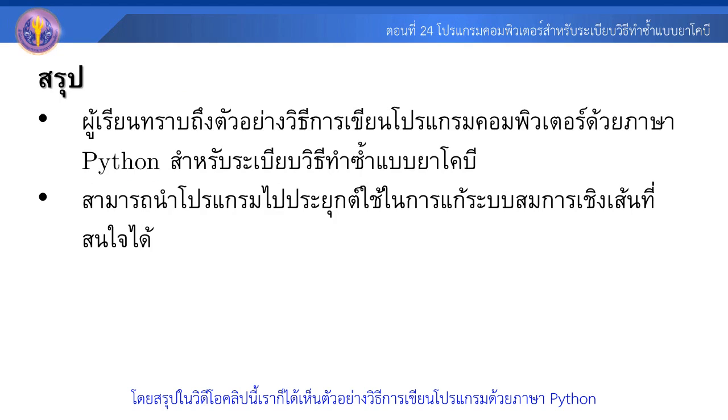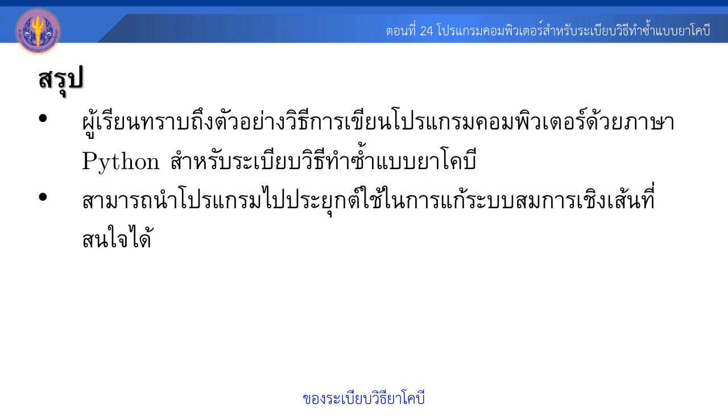จากนั้นลอง Run Program ดูนะครับ ก็จะพบว่าในตัวอย่างนี้เราใช้ประมาณ 85 รอบในการที่จะได้คำตอบที่รู้เข้า ภายใต้ค่า EPS ที่เรากำหนด โดยสรุปในวิดีโอคลิปนี้เราก็ได้เห็นตัวอย่างวิธีการเขียนโปรแกรมด้วยภาษา Python ของระเบียบวิธี Jacobi